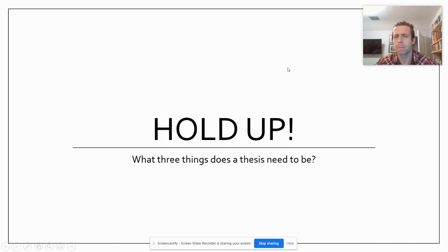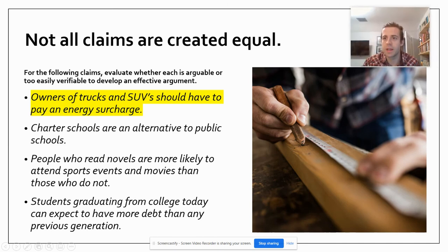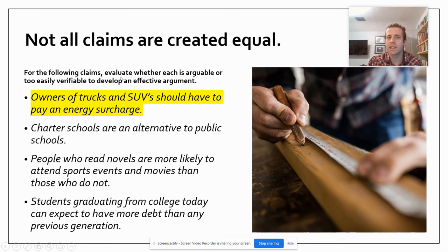Speaking of keeping things in mind — what are the three things a thesis needs to be? See if you can write them down. It needs to be arguable, it needs to be supportable, and it needs to be specific. So let's take a look at some different examples of theses and claims: owners of trucks and SUVs should have to pay an energy surcharge; charter schools are an alternative to public schools; people who read novels are more likely to attend sports and movies than those who do not; and students graduating from college today can expect to have more debt than any previous generation. Think about whether each is arguable, defensible, and specific enough to be a valid thesis.